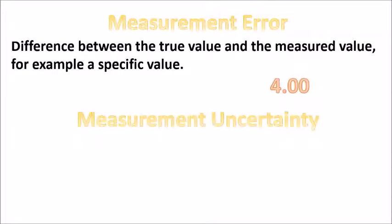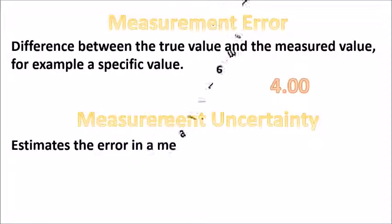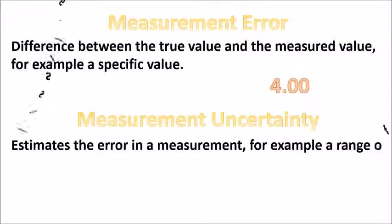Measurement uncertainty estimates the error in a measurement, for example, a range of possible values of the error.